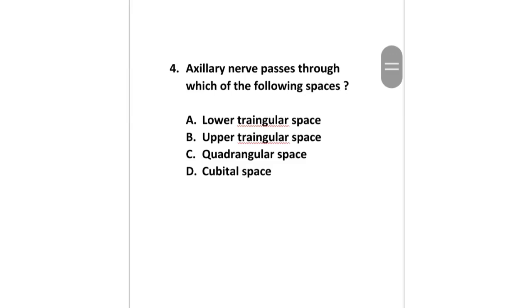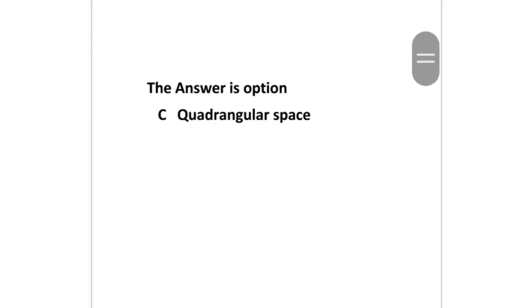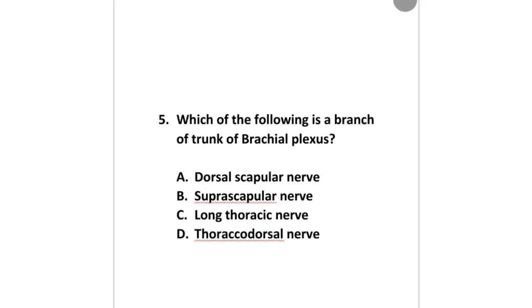Axillary nerve passes through which of the following spaces? Lower triangular space, upper triangular space, quadrangular space, or cubital space? The answer is option C: quadrangular space.